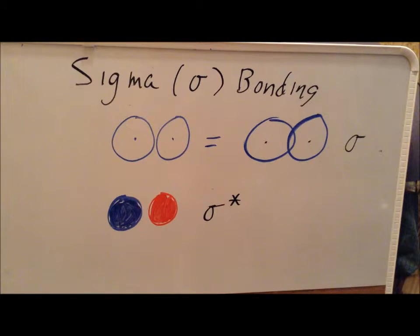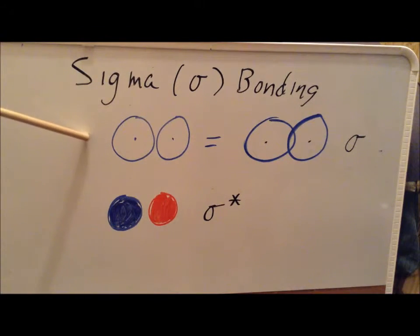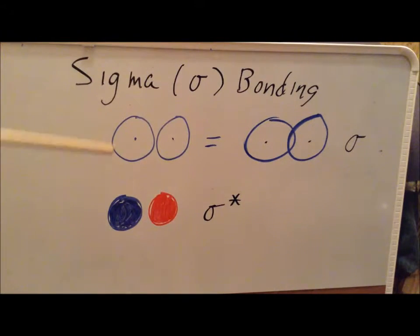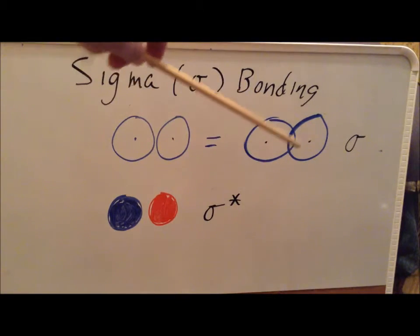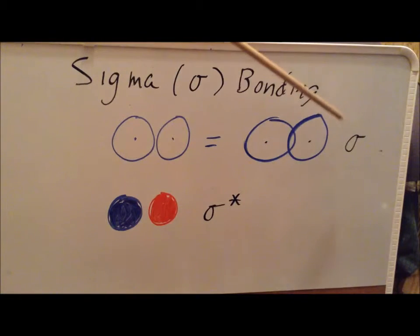The first type of bonding we're going to look at in molecular orbital theory is the sigma bond. Here we have a representation of a sigma bond between a 1s orbital on one atom and a 1s orbital on another atom. Generally, we represent a 1s, 2s, or 3s orbital simply as a circle — it's a schematic. We interpret that as a region of electron density around each nucleus, with an overlap between the two.